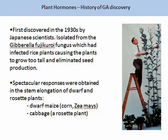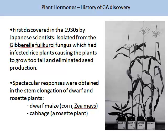Spectacular responses were obtained from experiments on cabbage, a rosette plant, as can be seen in the image. Normal plants without additional GA are shown on the left-hand side, while plants with GA showed excessive stem elongation. Other experiments were conducted on corn, where dwarf plants were exposed to gibberellic acid. This increased stem elongation and resulted in tall-looking plants, as demonstrated in the illustration on the slide.